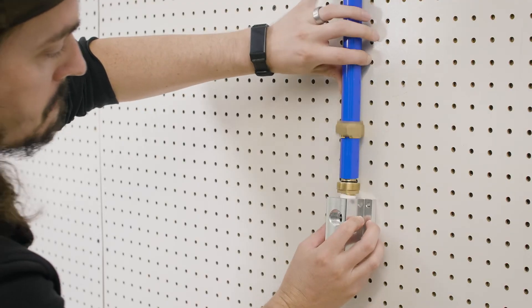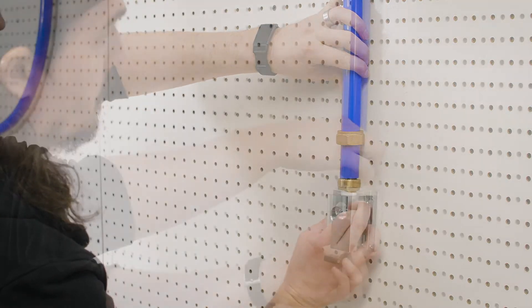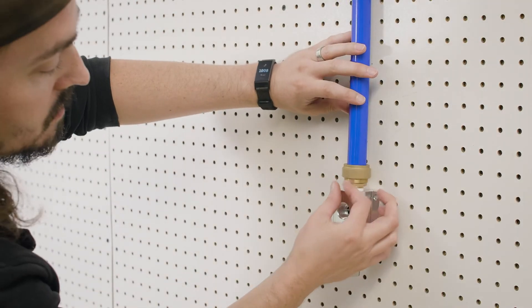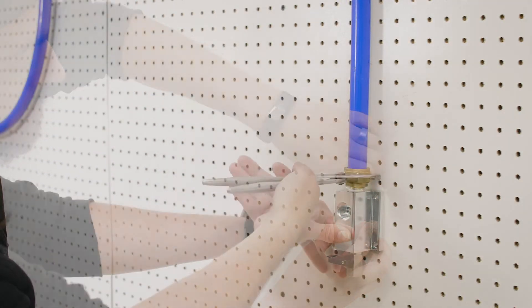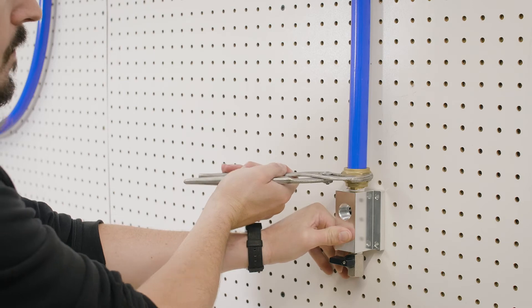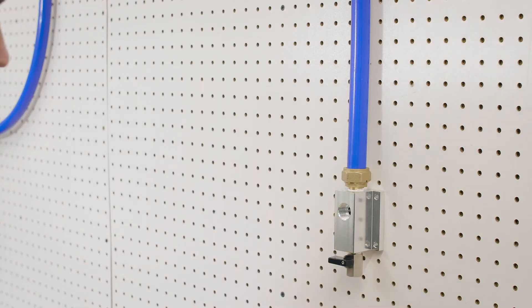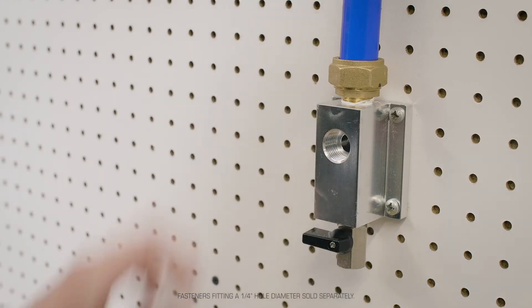Install the outlet to the end of the tubing you plan to use as an air source. Then, securely mount the outlet to the wall.